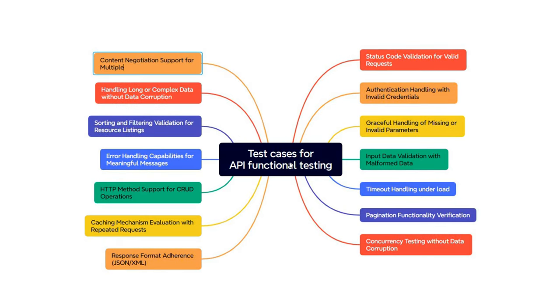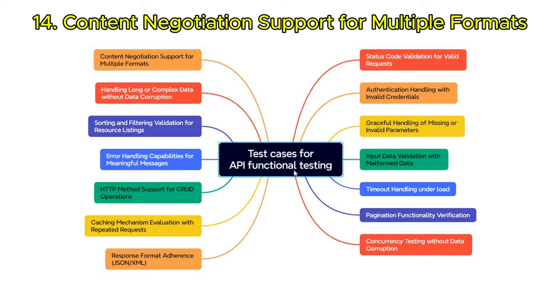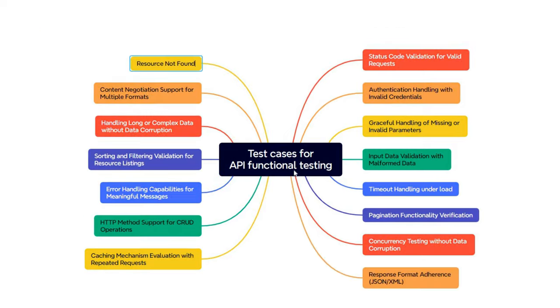Content negotiation support for multiple formats: test the API's support for content negotiation by specifying different Accept headers such as JSON or XML, and verifying that the response format matches the requested format.